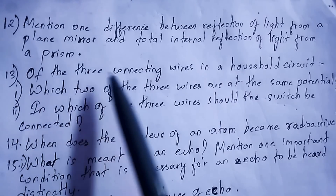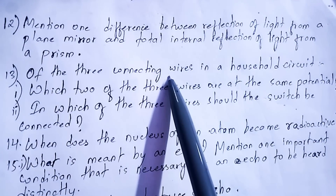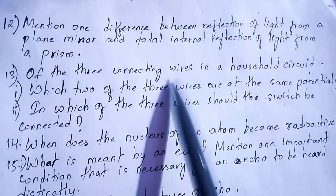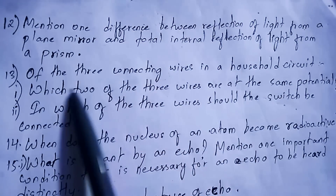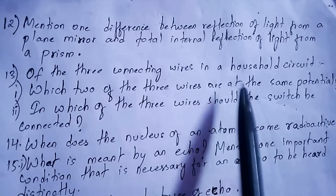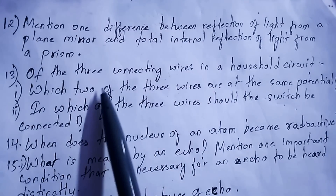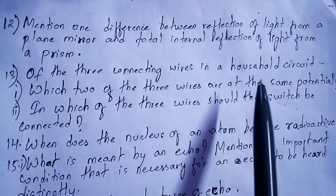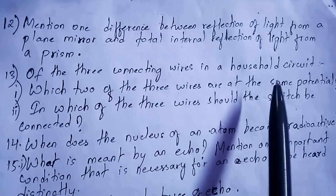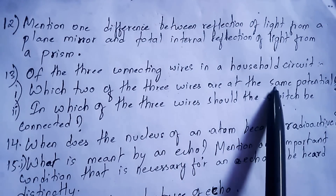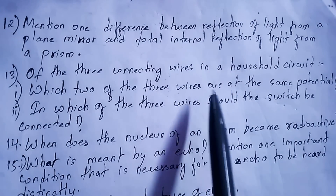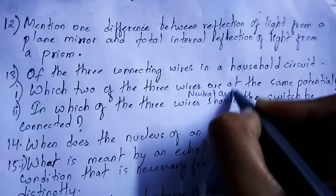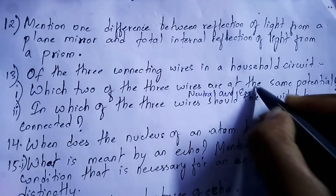Of the three connecting wires in a household circuit — live wire, neutral wire, and earth wire — which two are at the same potential? The neutral wire and the earth wire are at the same potential.